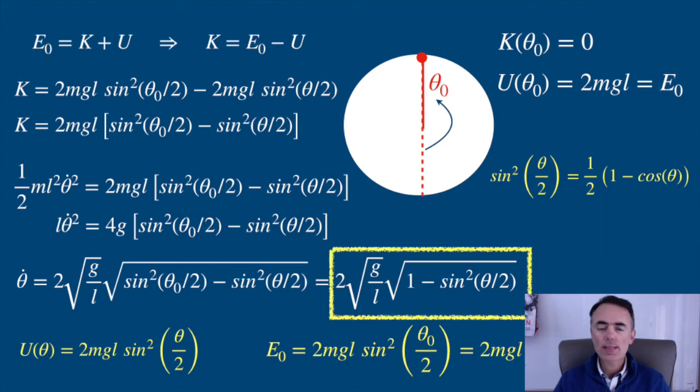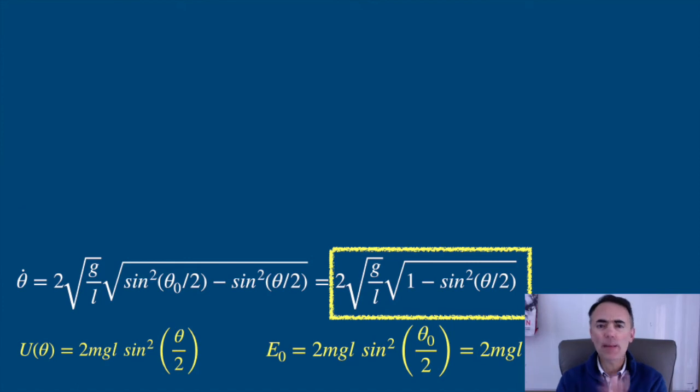This is an exact solution. This is the angular velocity as a function of the angle, for a total energy equal to the potential energy of the Pendulum at rest at the top of the circular trajectory. Let's plot this. I'll plot theta dot over the square root of G over L versus theta. And I'll do it assuming that the length is 9.8 and theta naught is pi.